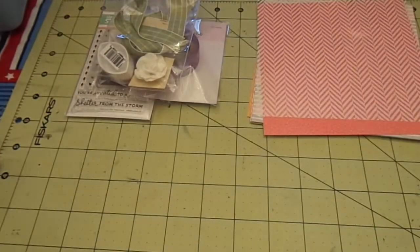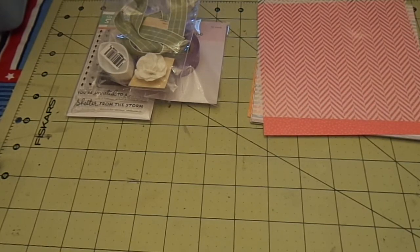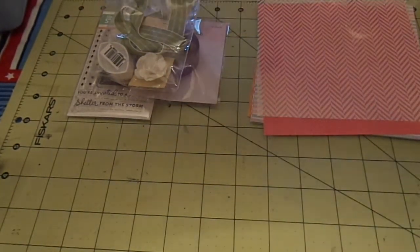And then I also got some cardstocks. I'll share real quick. So you get some Neenah Solar White. You get two sheets of Neenah Solar White, a sheet of kraft cardstock, and let me see if it says where it's from.